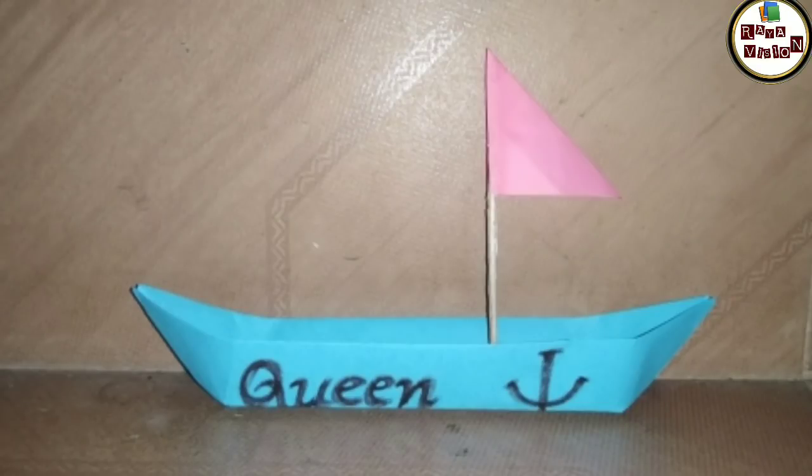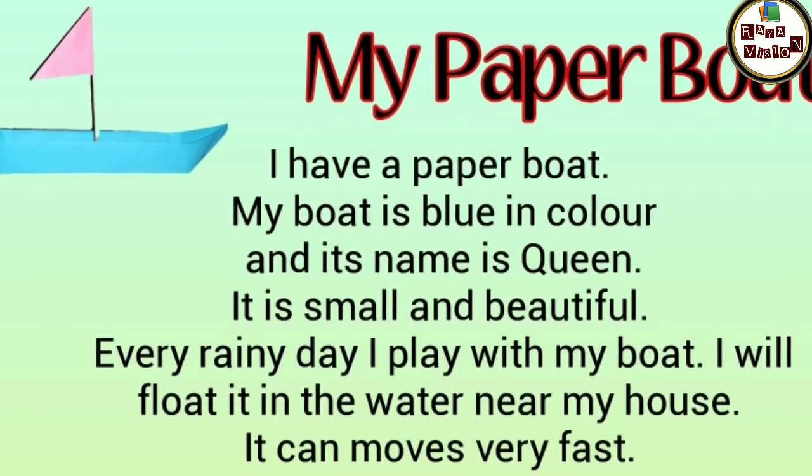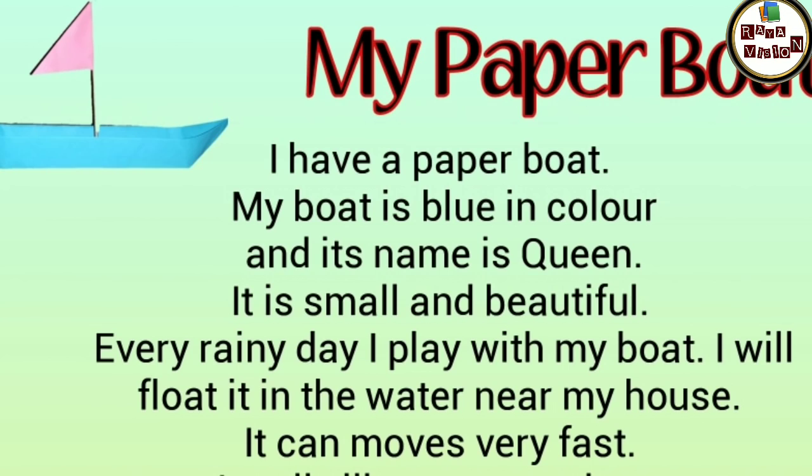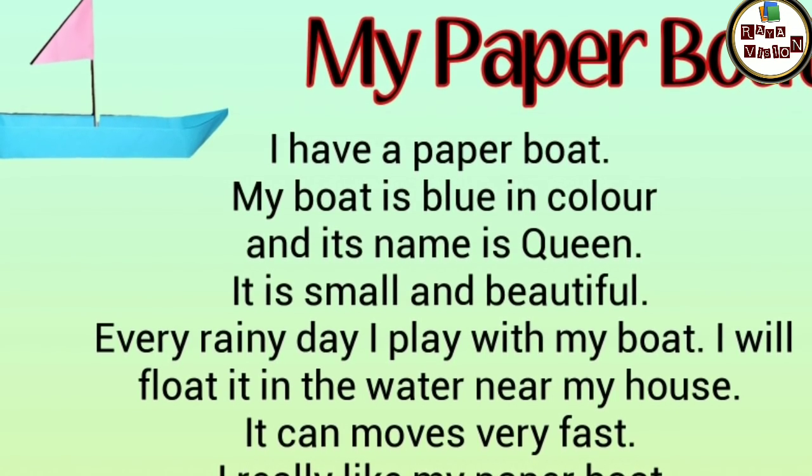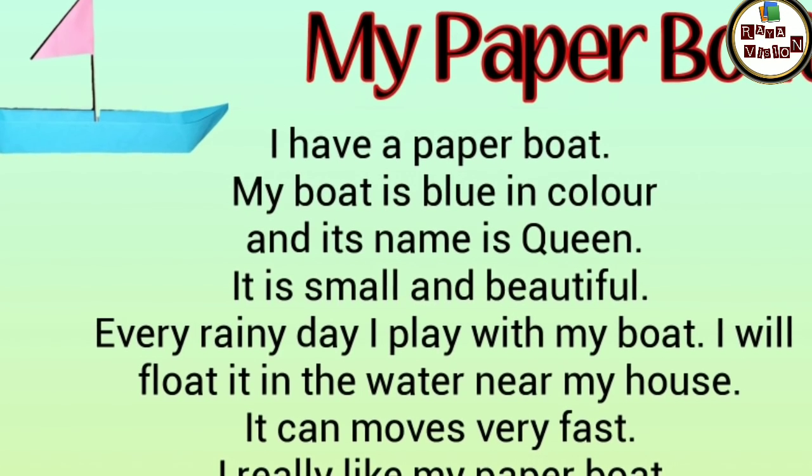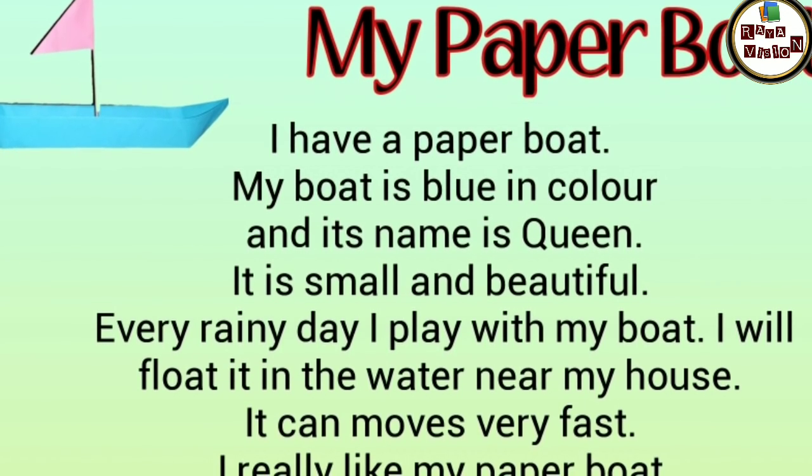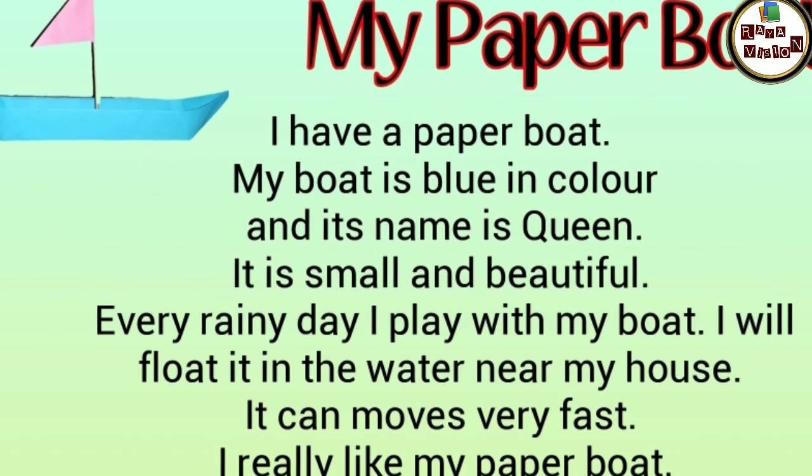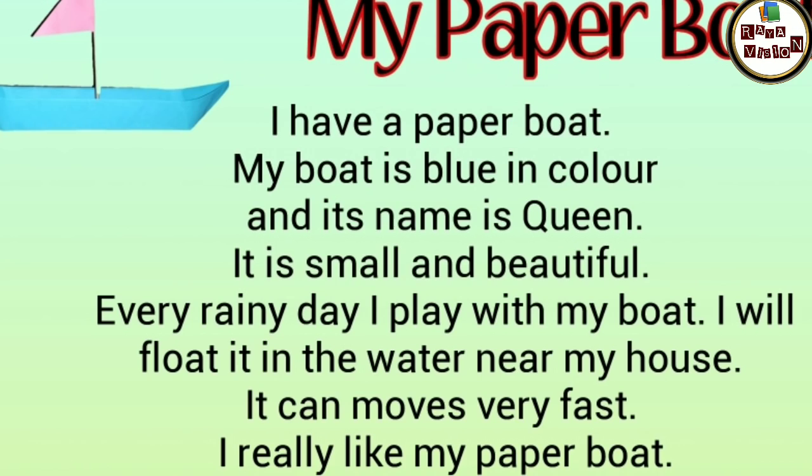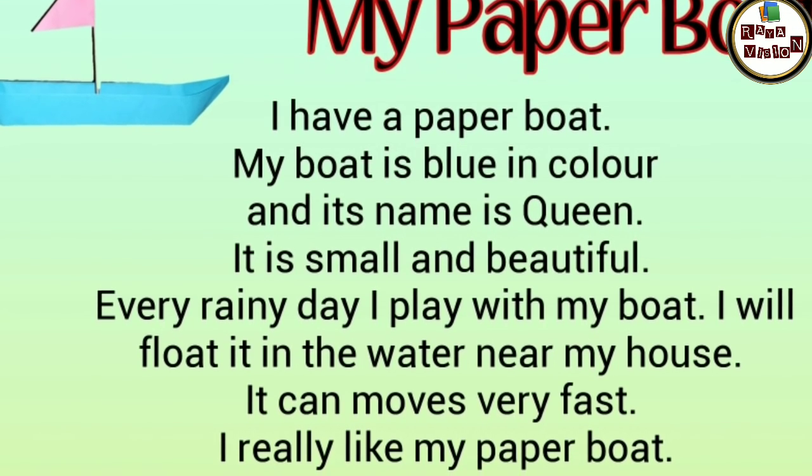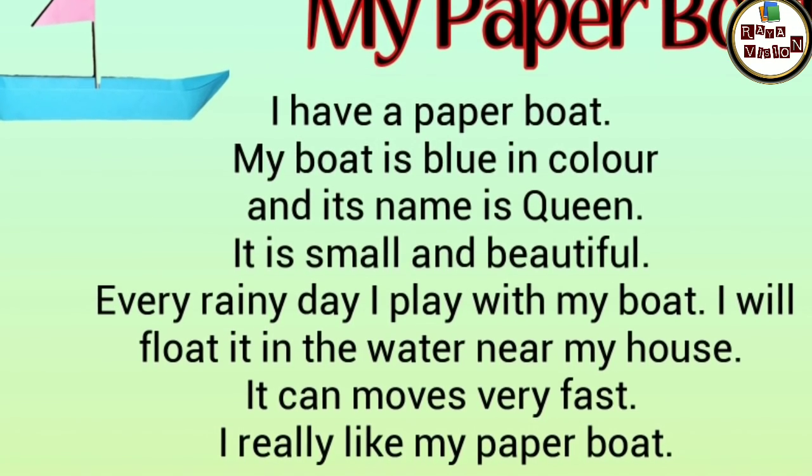You can give a name for your boat and after that write a small description about your boat. I wrote my description like this: My Paper Boat. I have a paper boat. My boat is blue in color and its name is Queen. It is small and beautiful. Every rainy day I play with my boat. I will float it in the water near my house. It can move very fast. I really like my paper boat.